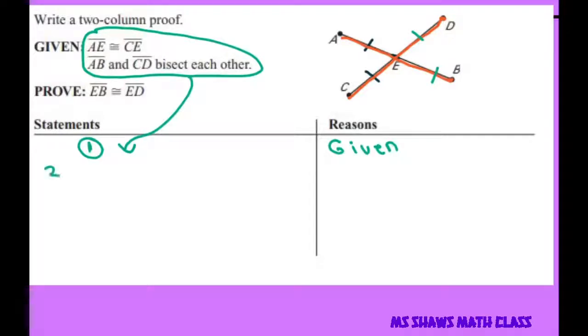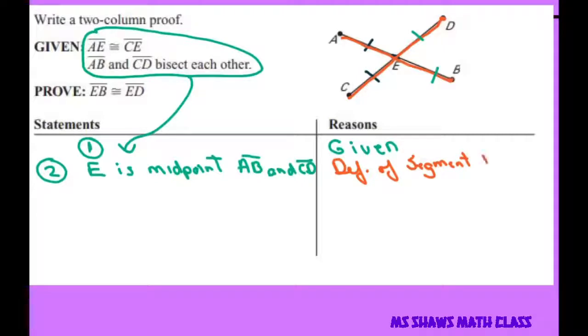Alright, so for two we're going to write that E is midpoint AB and CD. Now that's due to definition of segment bisector.